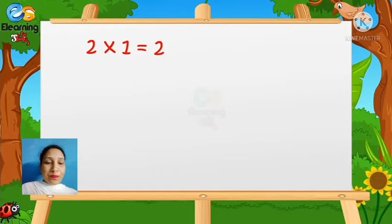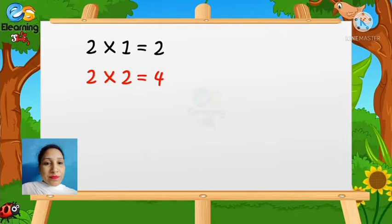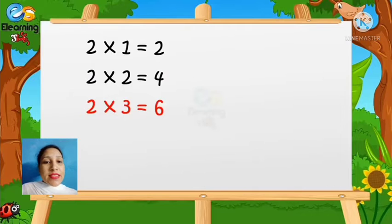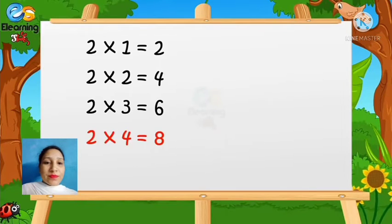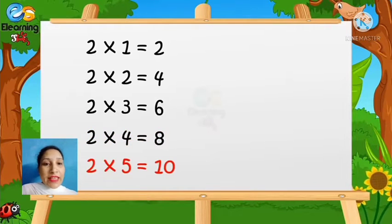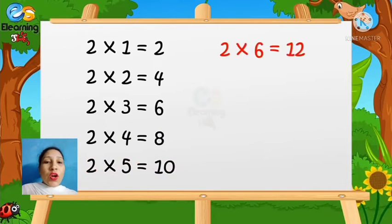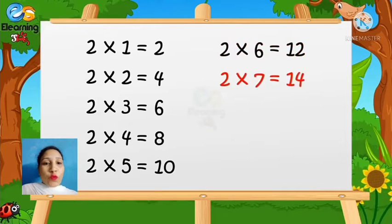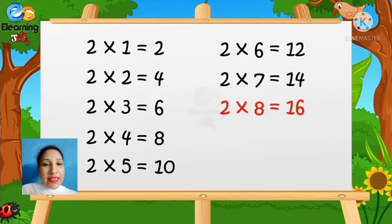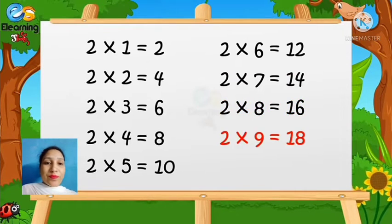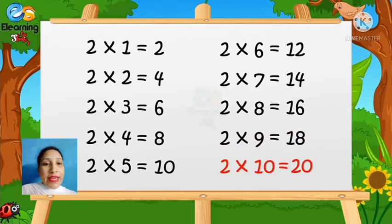Now we will revise the table of two again. Two ones are two, two twos are four, two threes are six, two fours are eight, two fives are ten, two sixes are twelve, two sevens are fourteen, two eights are sixteen, two nines are eighteen, two tens are twenty.